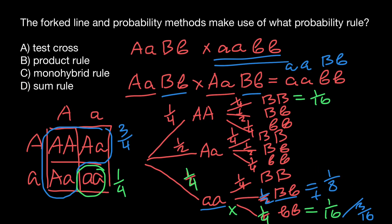As you can see, the correct answer is answer B: in the fork line method, we use the product rule. That's all for today — thank you for your attention. Please subscribe for my new videos, which I post almost every day, and see you in the next video. Goodbye!